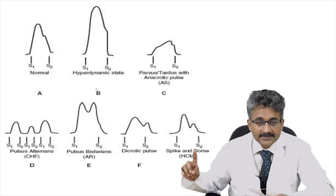Summarizing pulse characters: the anacrotic pulse (pulsus parvus et tardus) is slow rising, late peaking, and low volume — seen in aortic stenosis. Pulsus parvus alone (low volume only) is seen in mitral stenosis.